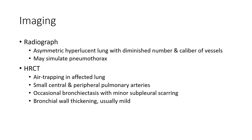On radiograph, asymmetric hyperlucency with diminished number and caliber of vessels may simulate pneumothorax. CT shows decreased attenuation in the affected lung, small central and peripheral pulmonary arteries, occasional bronchiectasis with minimal peribronchial scarring, and bronchial wall thickening.